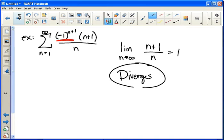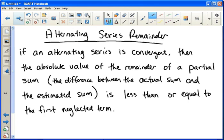There's one more thing we can do with the alternating series test, and that's called the alternating series remainder theorem. Here's what it says. If an alternating series is convergent, then the absolute value of the remainder of a partial sum - and the remainder is just the difference between the actual sum and the estimated sum - is less than or equal to the first neglected term. So let me try to put this in simpler words. If you add up, say, the first hundred terms, and you want to see how accurate is that really, because we're supposed to go to infinity and I just did the first hundred.